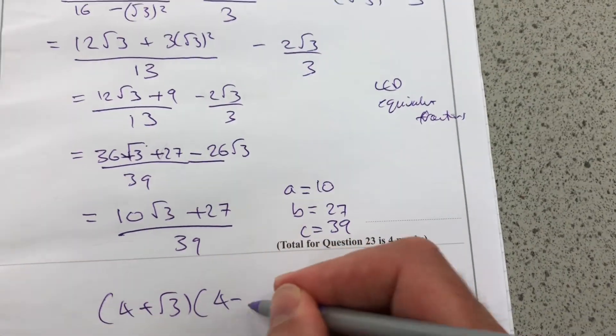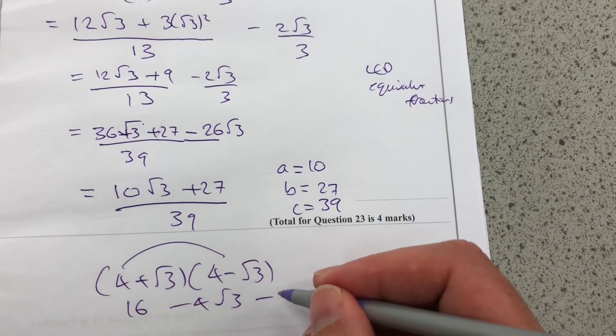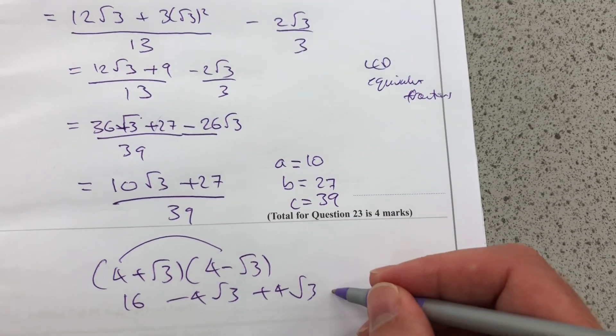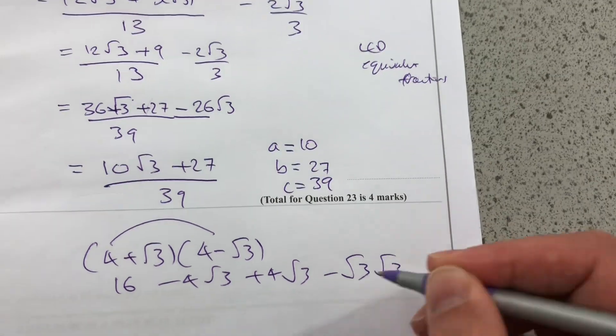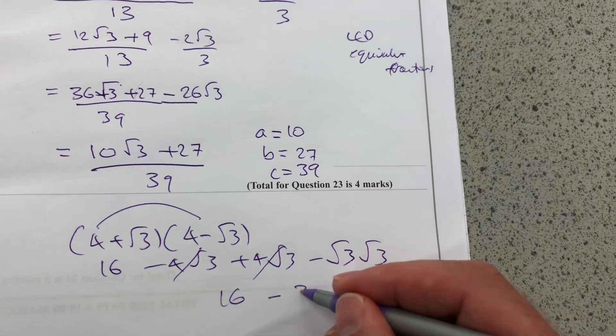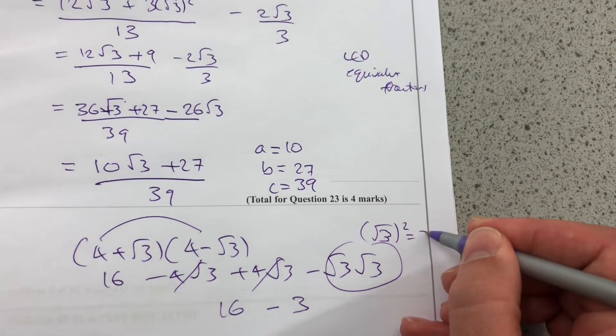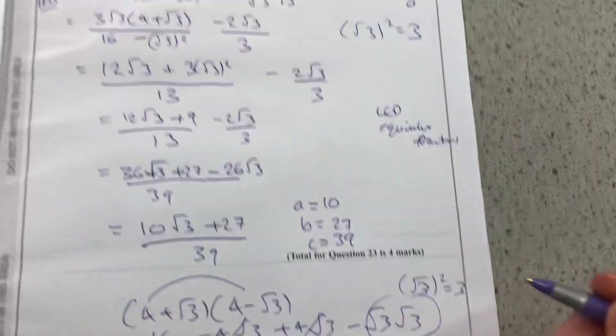I'll do that here quickly. 4 minus root 3. 16 minus 4 root 3 plus 4 root 3 minus root 3 root 3. Those terms cancel. And I get 16 minus 3. Because that is root 3 squared, which is 3. And I get 13. OK?